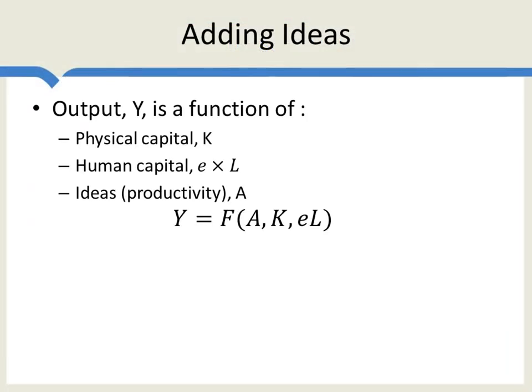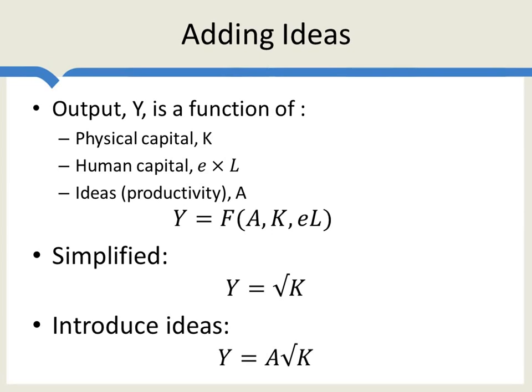Let's now add ideas to the model. Remember, we began with a very general production function in which output was created by ideas, physical capital, and human capital, and we simplified it to output as a square root of the capital stock. Let's now make output equal to A times the square root of capital. An increase in A means you get more output for the same capital stock — that's the sense in which A represents ideas or productivity.